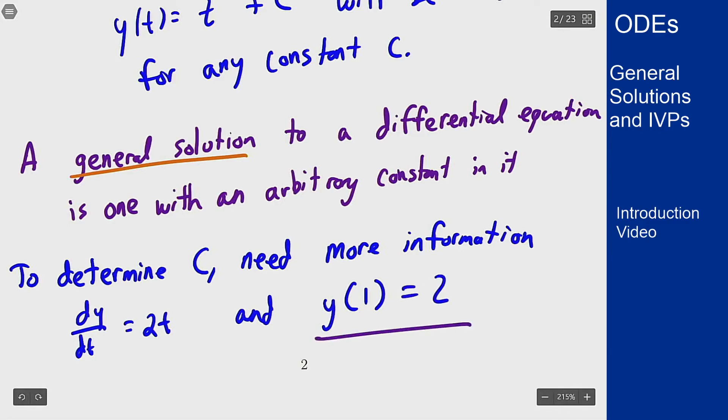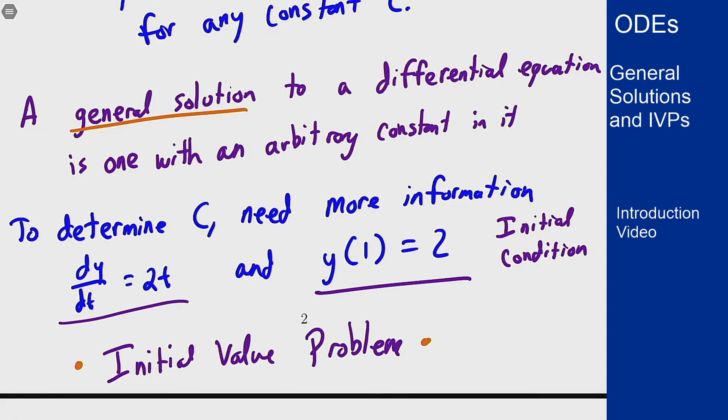This part here is what's called an initial condition for the problem and combining that with the differential equation that we had before gives what's called an initial value problem and this will be one of our main orders of study as we go through this course.